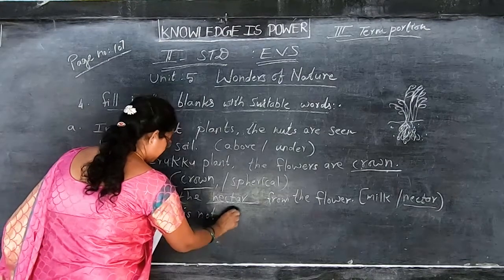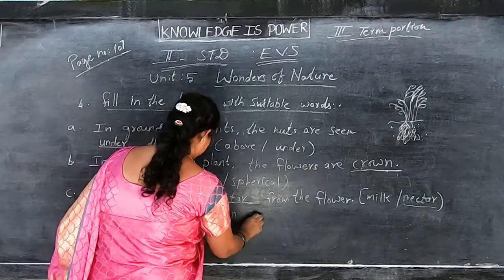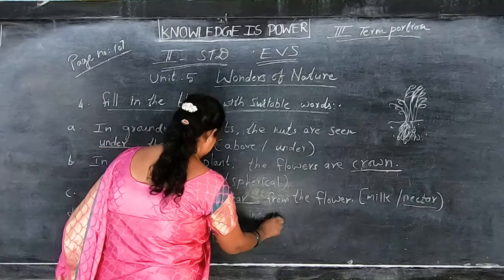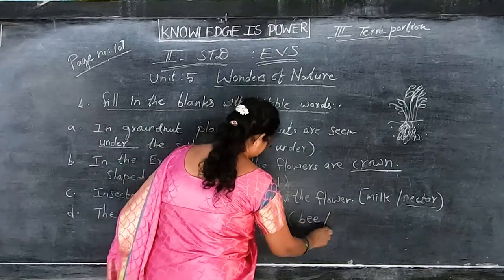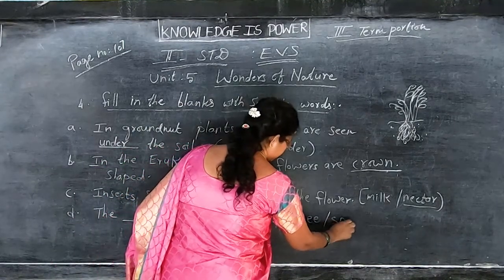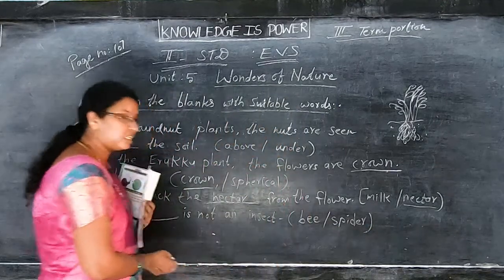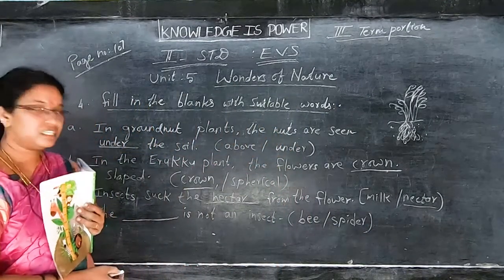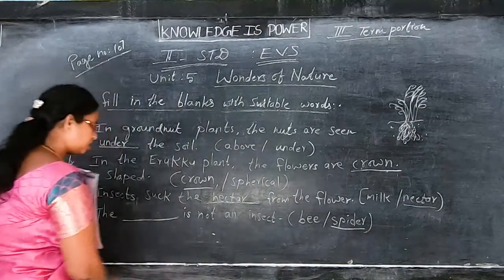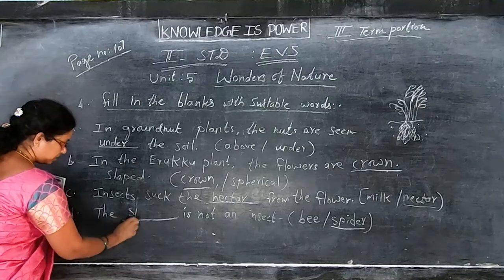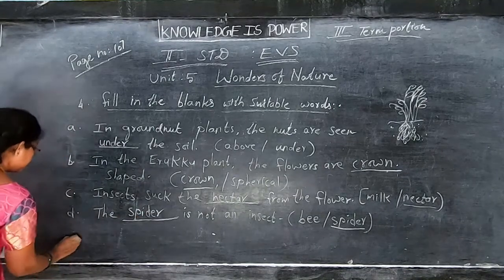The next blank: dash is not an insect. The answer is spider — S-P-I-D-E-R — because it has eight legs. So spider is not an insect. You write spider in the dash, children.